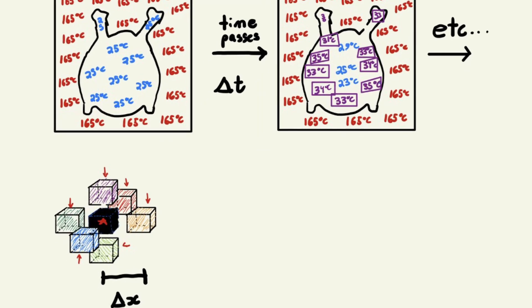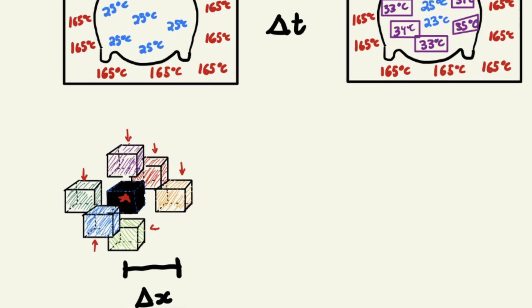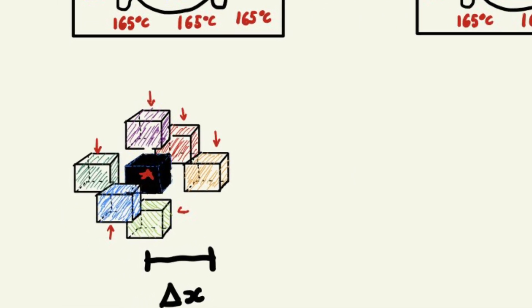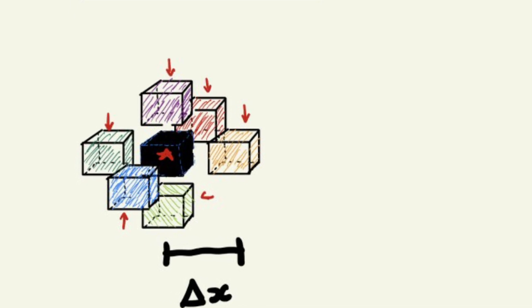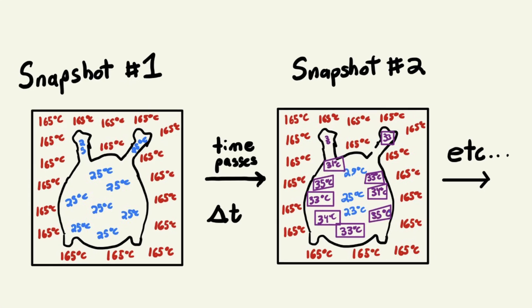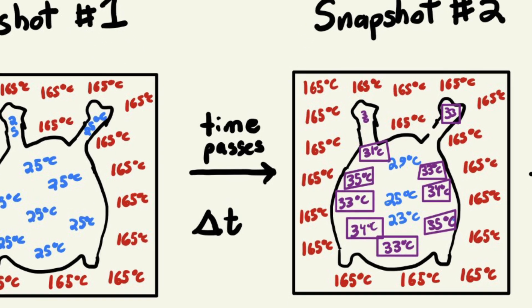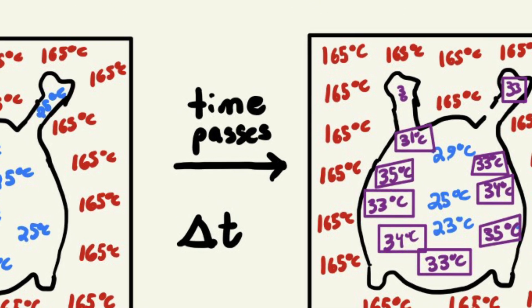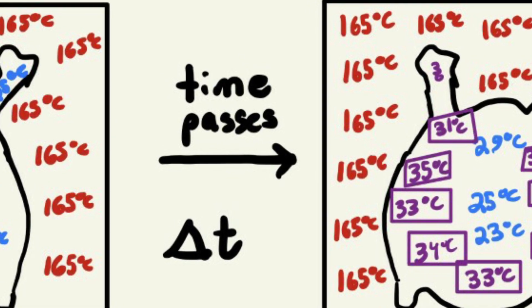Firstly, there's the distance between the blocks — suppose we're simulating the earth and the blocks are spaced really far apart in our voxel file, there's going to be less temperature change. So the closer together the blocks are, the more temperature change. Secondly, there's the time between those snapshots — the closer together those snapshots are, the less temperature change there's going to be. So if the snapshots are a few seconds apart there's going to be more temperature change than a few milliseconds apart.